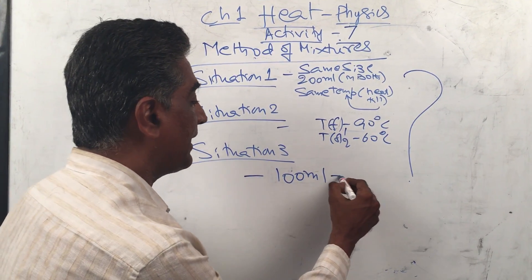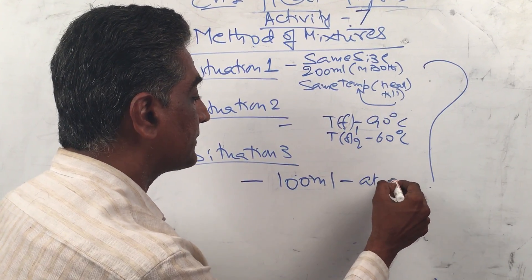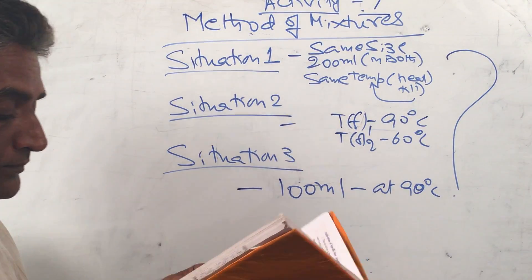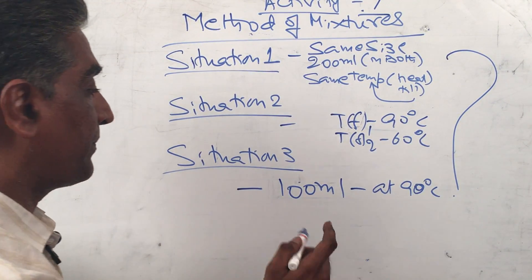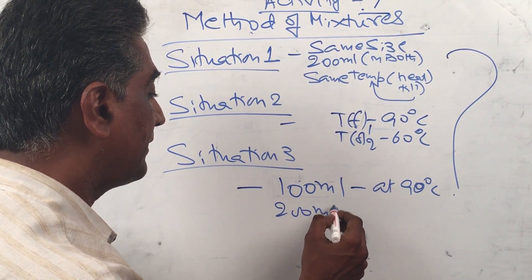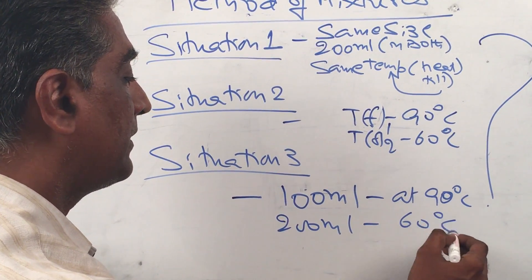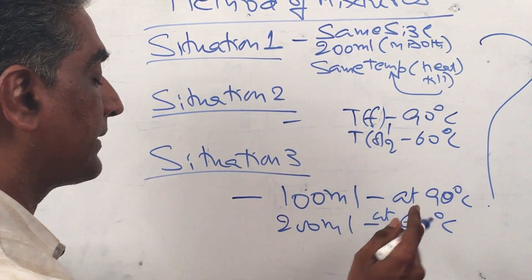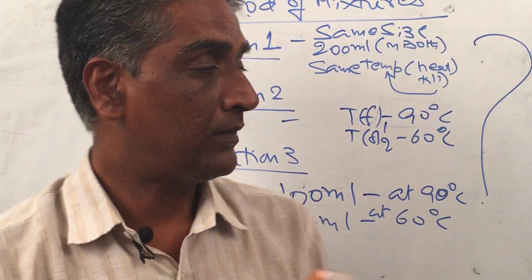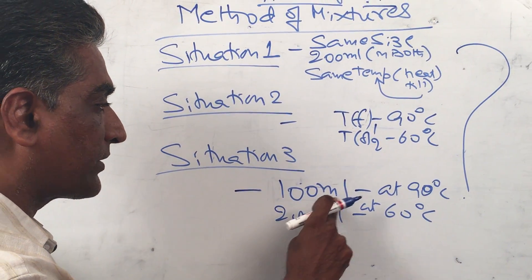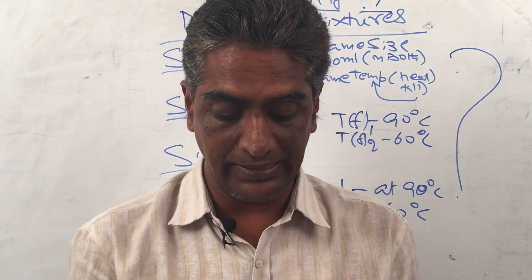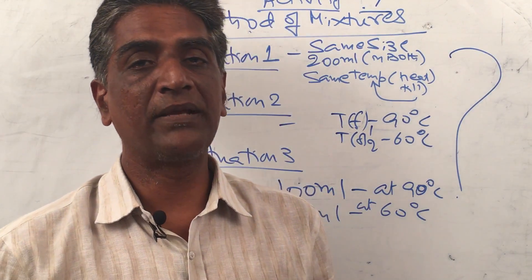Situation three: Take 100 milliliters of water at 90 degrees centigrade and 200 milliliters of water at 60 degrees centigrade, and mix the two together.